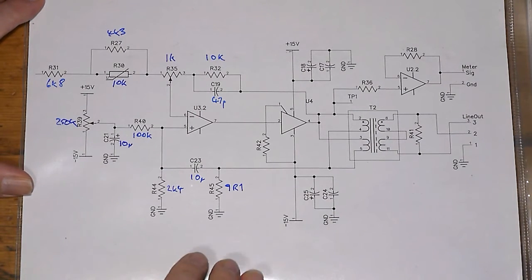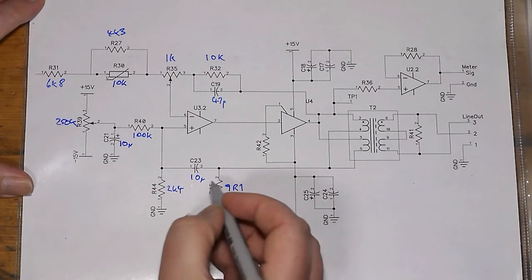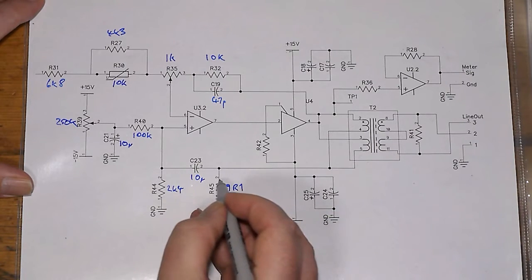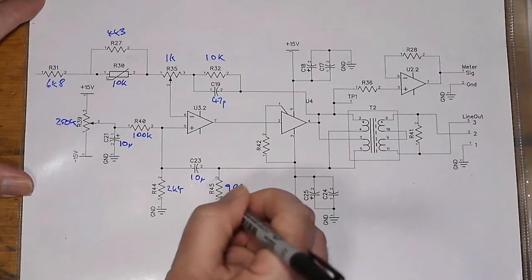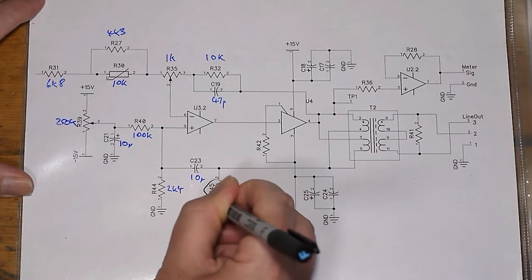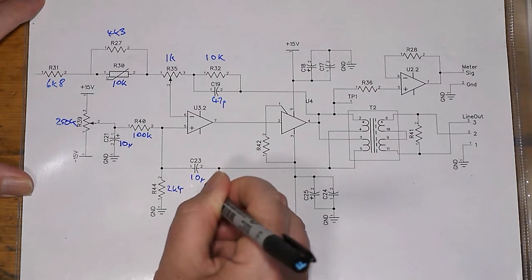So off camera, I tried a little test, and what I did was to just with a wire link, to short R35, R45 rather, here. Just a wire link across there.